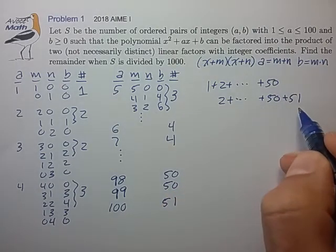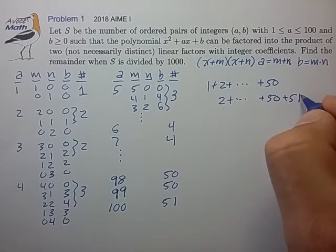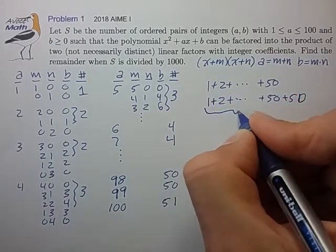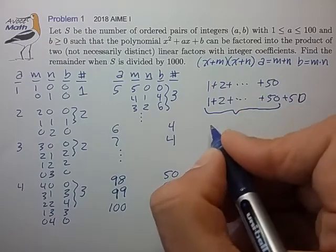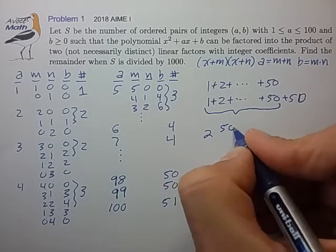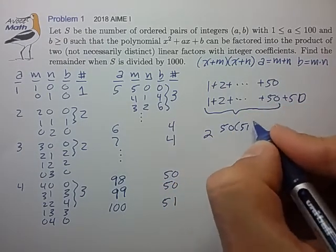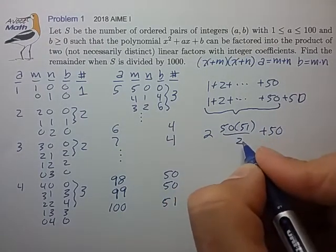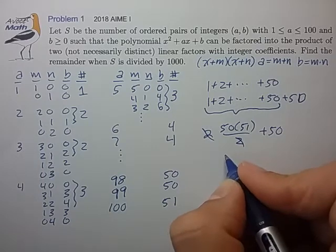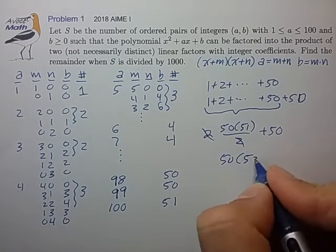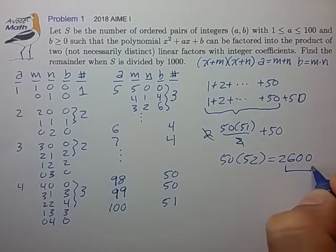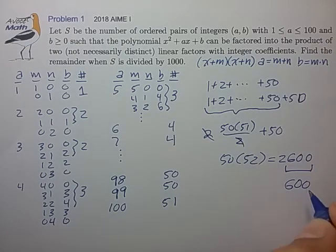We just have to add all these numbers up. I see an opportunity to borrow one here so that we have double of this sequence: 2 × (50 × 51)/2 + 50. That's 50 × 52 which equals 2600. The last three digits are 600. Final answer.